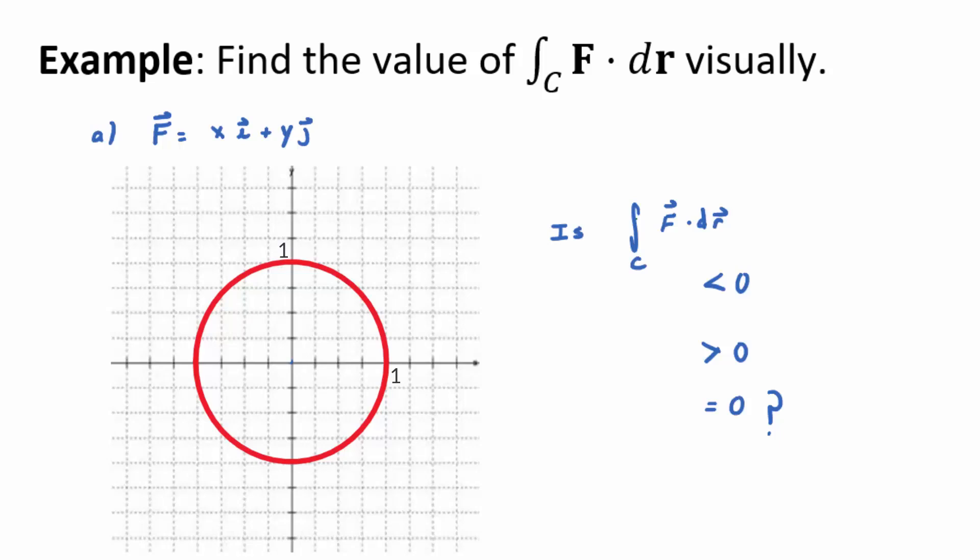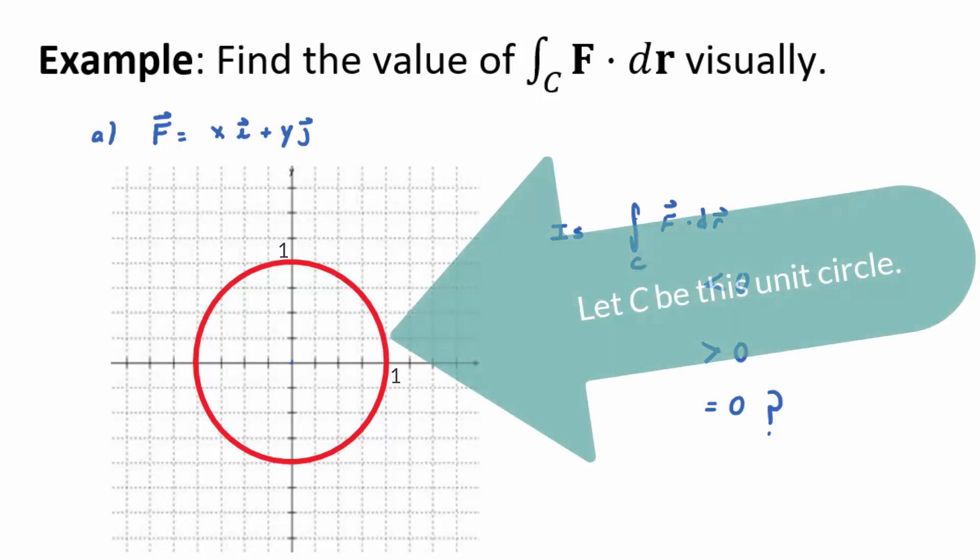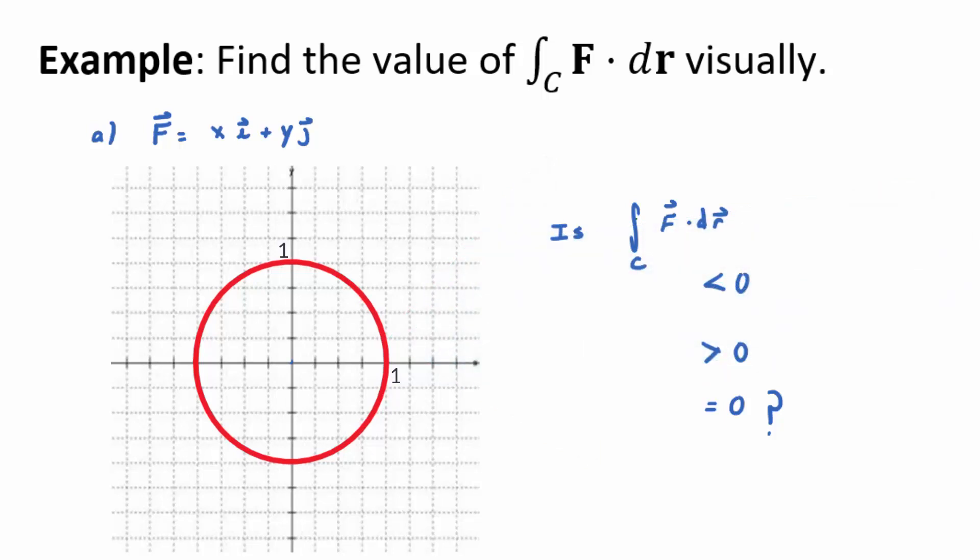Suppose F is xi plus yj, so that's just x comma y in component form. Find the value of the integral F dot dr visually. What does this vector field look like if you graph a sampling? The vectors point radially out from the origin. I graphed this exact one in the video from 16.1.